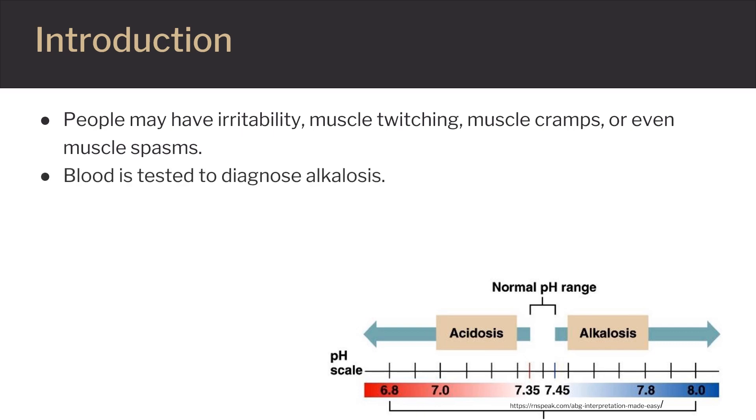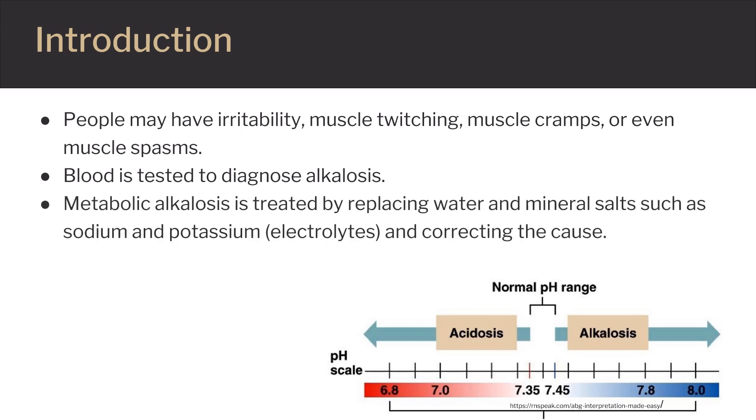Blood is tested to diagnose alkalosis. Metabolic alkalosis is treated by replacing water and mineral salts, such as sodium and potassium electrolytes, and correcting the cause. Respiratory alkalosis is treated by correcting the cause.